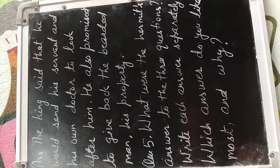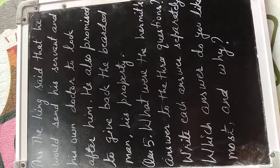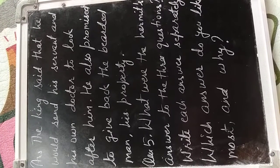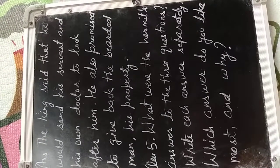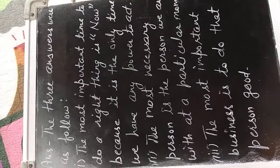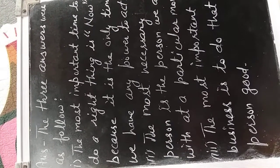Question number five: what were the hermit's answers to the three questions? Write each answer separately. Which answer do you like most and why? Sanyasi ke tine answer joh usnei dhiye tineo questions ke woh kya thae? Perti ek answer ko aapne alag se likhna hai. Koon sa answer aapko sabse jyadha phasand aya aur kyong aya? The answer is: the three answers were as follows.